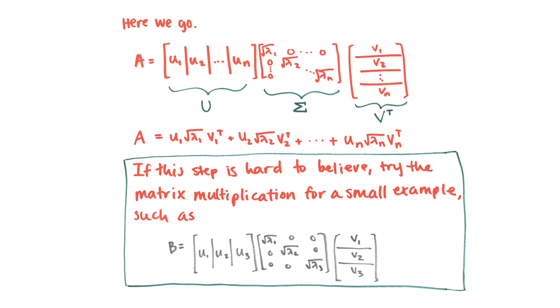Then when you do this multiplication, it's the same thing as saying u1, singular value 1, v1 transpose, plus u2, singular value 2, v2 transpose, etc., all the way up to u sub n, singular value sub n, v sub n transpose. Now this is a big jump, and so I encourage you to try a little example and see how the zeros work out and how the columns all work out.